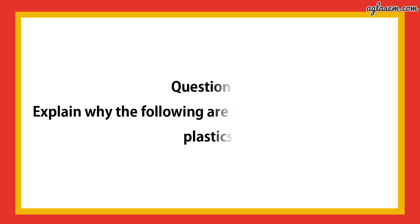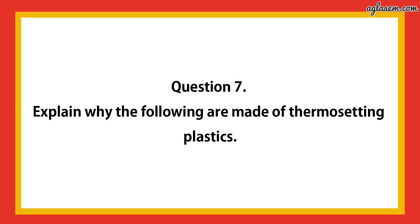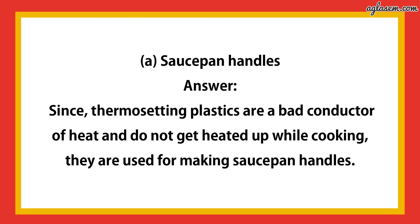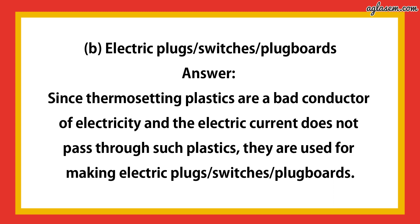Question number 7: explain why the following are made of thermosetting plastics. A — saucepan handles: since thermosetting plastics are bad conductors of heat and do not get heated up while cooking, they are used for making saucepan handles. B — electric plugs, switches, plug boards: since thermosetting plastics are bad conductors of electricity and electric current does not pass through them, they are used for making electric plugs, switches, and plug boards.